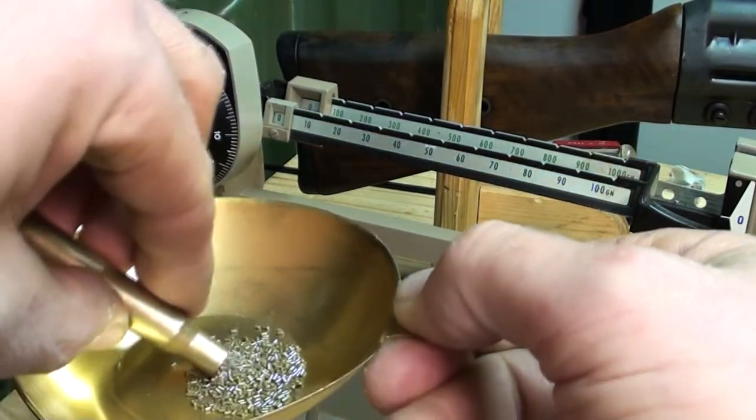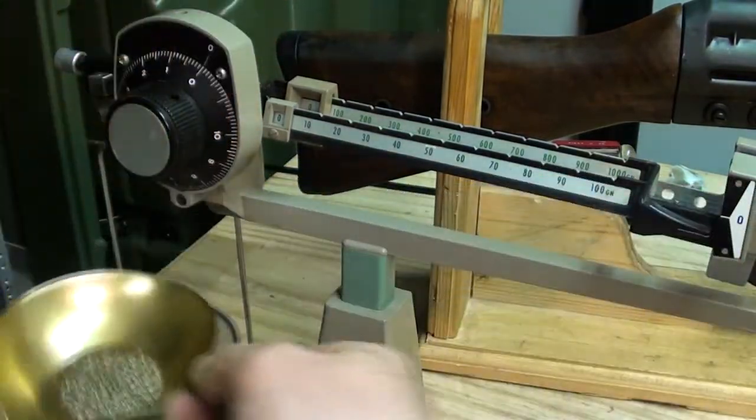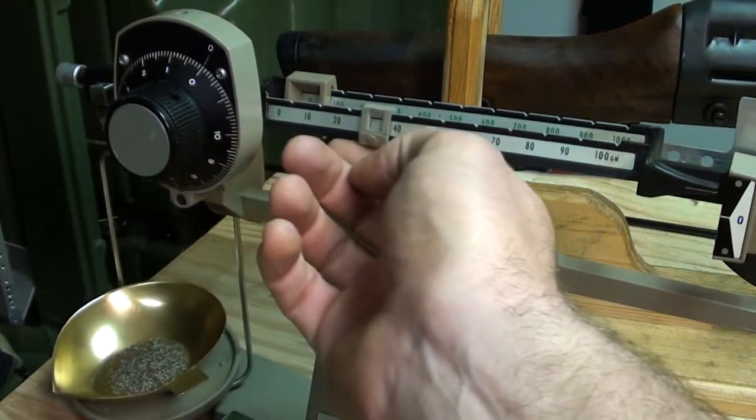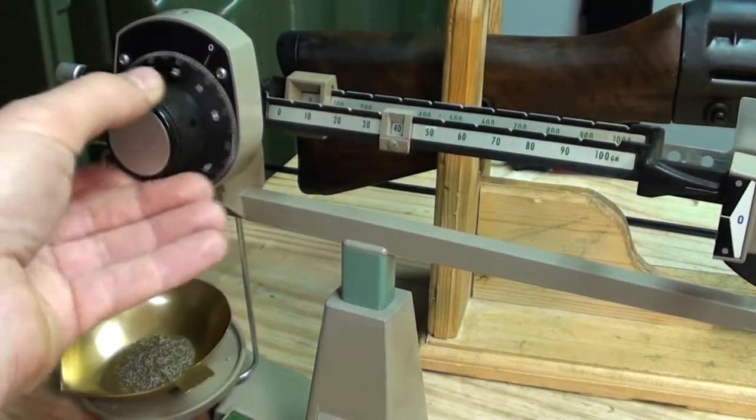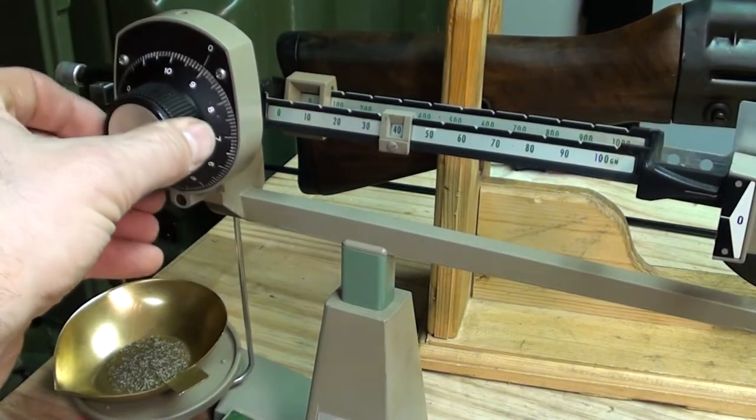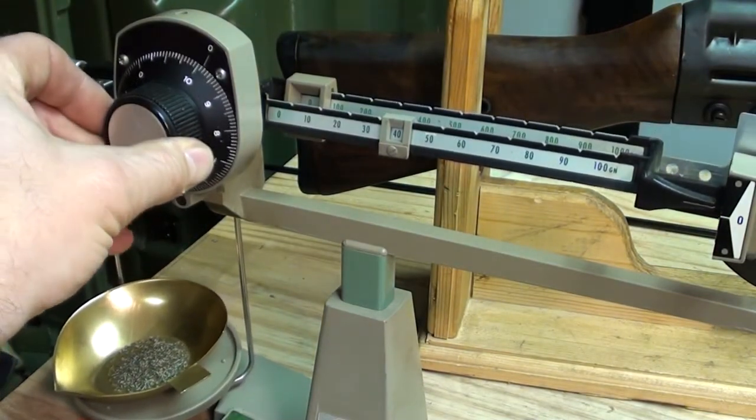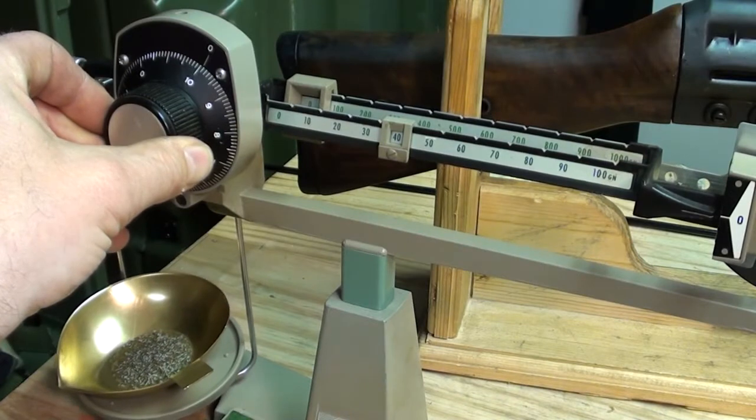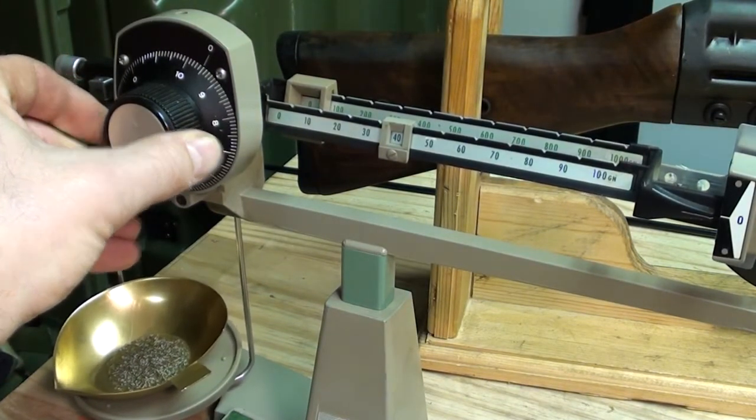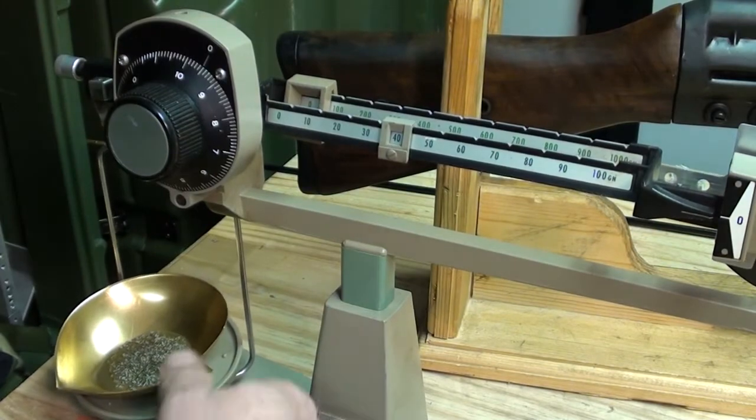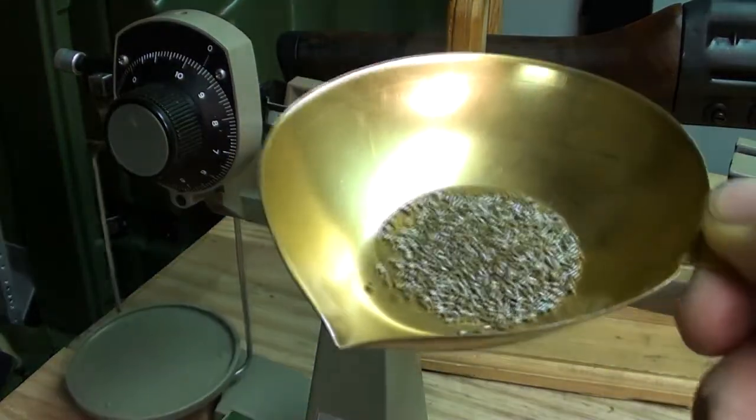Okay, let's see what we got here. Looks like about 49.5 grains of extruded rifle powder.